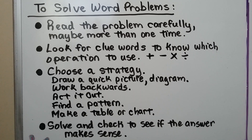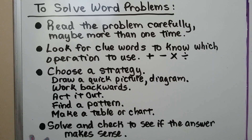To solve word problems, we read the problem carefully, maybe more than one time. We look for clue words to know which operation to use: addition, subtraction, multiplication, or division. We choose a strategy — we can draw a quick picture or a diagram, like in this video we're going to use bar models. We can also work backwards, act it out, find a pattern, or make a table or chart. Then we solve and check to see if the answer makes sense.